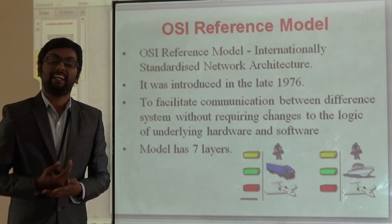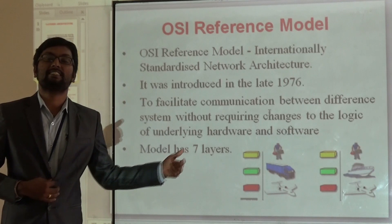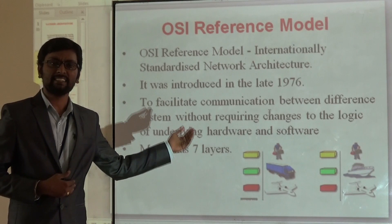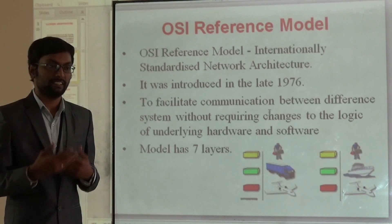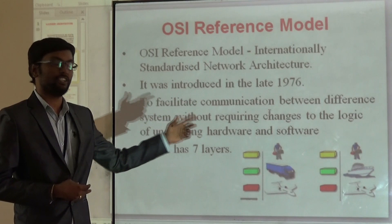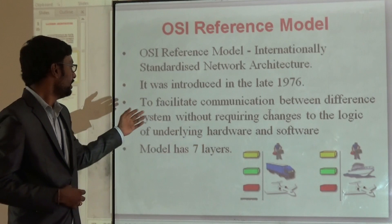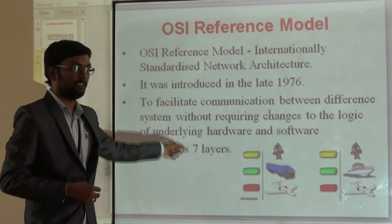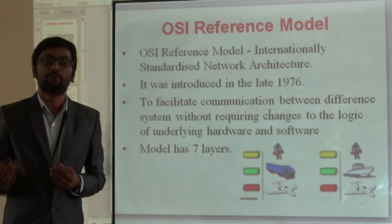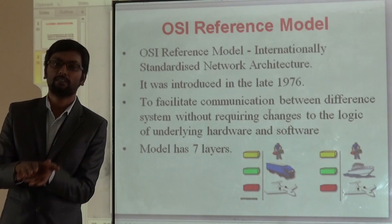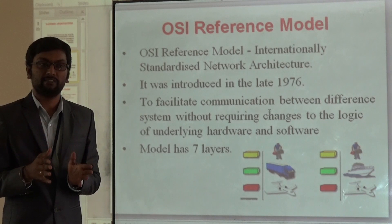For this topic of layered architecture, in the late 1970s, the International Standard Organization established a system called Open System Interconnection Model — the OSI model. This model consists of 7 layers, and using those 7 layers we send data from source to destination. This OSI model mainly facilitates communication between different systems without requiring changes to the logic of the underlying hardware and software. As technologies change day by day, whenever we install some hardware and software, we don't want to update or change those components to adapt our system — that is why we use this OSI model.